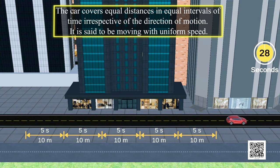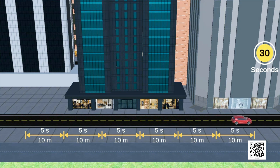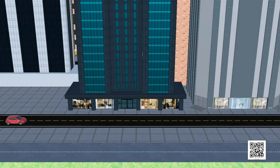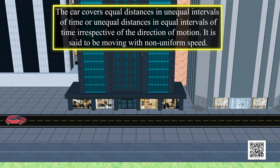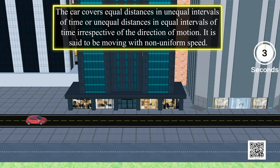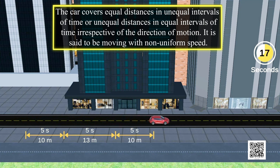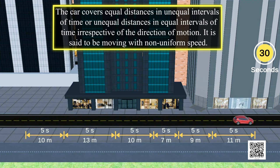It is said to be moving with uniform speed. Let us see non-uniform motion in a car. The car covers equal distances in unequal intervals of time, or unequal distances in equal intervals of time, irrespective of the direction of motion. It is said to be moving with non-uniform speed.